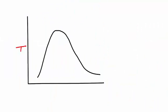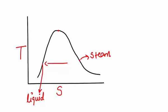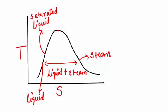In this dome, if any point is on this line, water is in the liquid phase. If any point is in this part, water is in vapor phase or becomes steam. Between these two curves, both liquid and steam are present simultaneously. Here, the liquid is called saturated liquid.